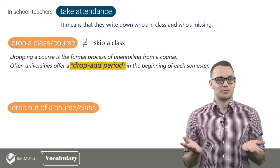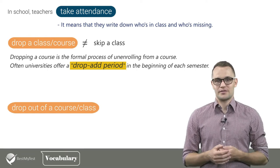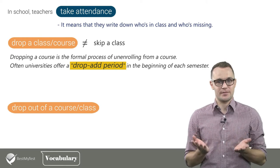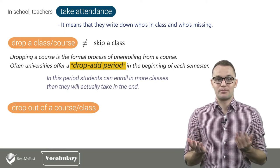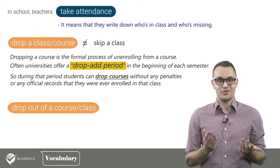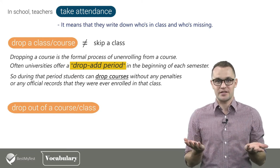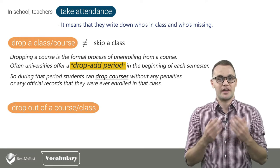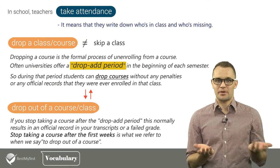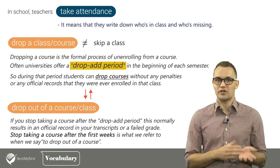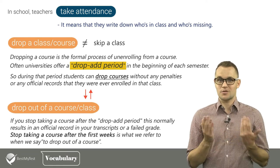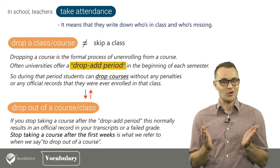Dropping a course is the formal process of unenrolling from a course. Often universities offer a so-called drop-and-add period in the beginning of each semester. In this period, students can enroll in more classes than they will actually take, and they can drop courses without any penalties or any official records. If you stop taking a course after the drop-and-add period, this normally results in an official record in your transcripts or a failed grade. Stopping a course after the first weeks is what we refer to when we say 'drop out of a course.'